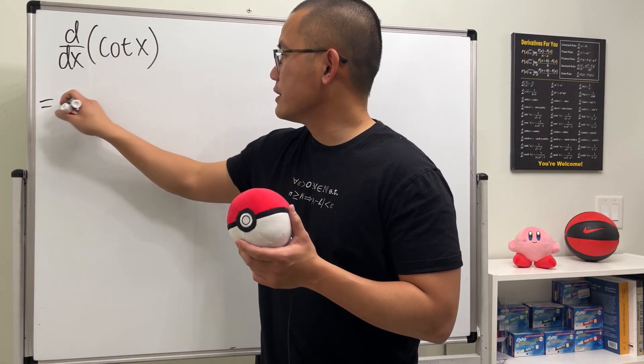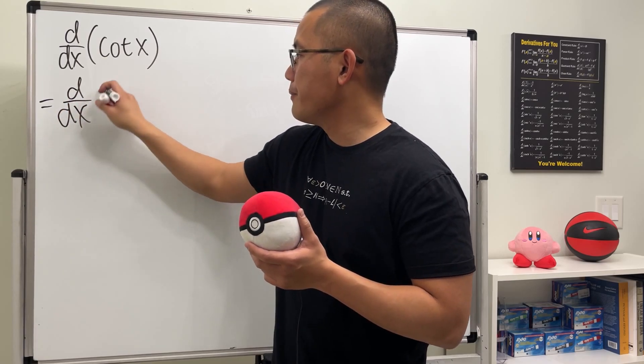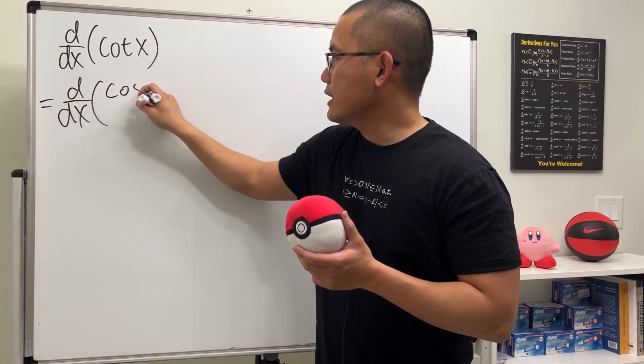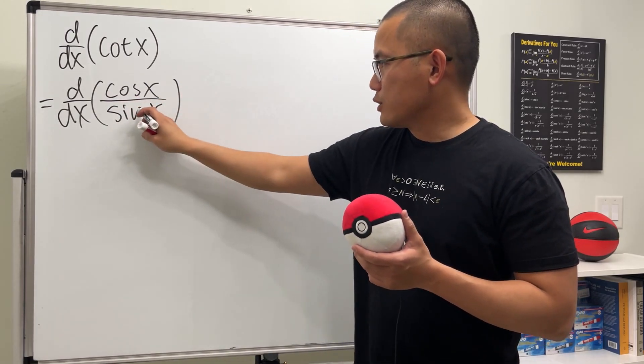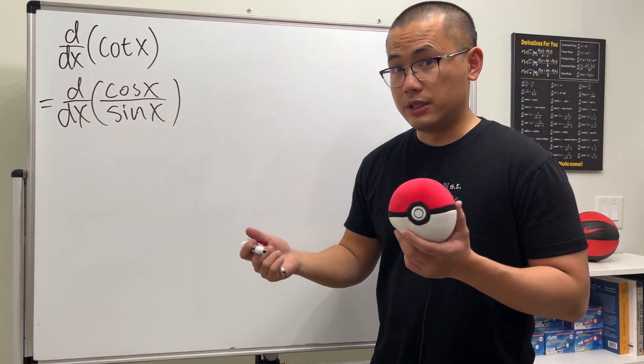So that will be the change first. So let's go ahead and write that down right here. Again, this is cosx over sinx. And because once we have this change, we can just go ahead and use the quotient rule.